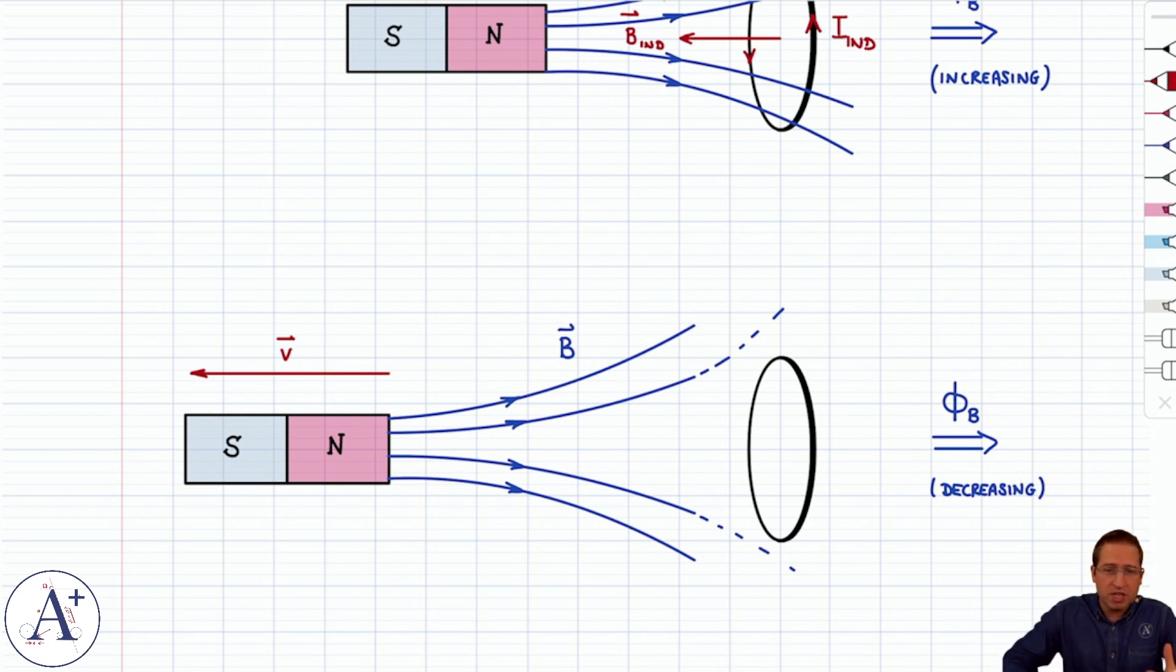So now, phi_B is decreasing to the right. Well, B_induced must oppose the change in flux. In this case, B_induced is going to have to come to the rescue and point to the right to try to maintain the flux to the right that is decreasing. And the only way that I get B_induced to point to the right is if I_induced flows around the conducting ring like this by the right-hand rule.